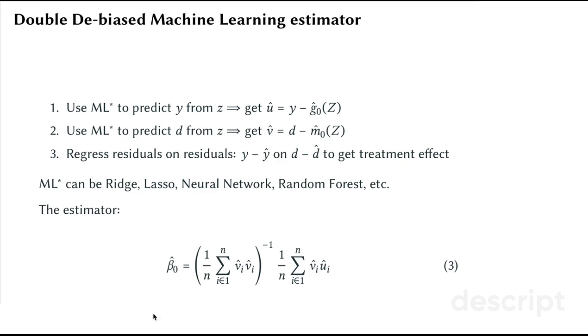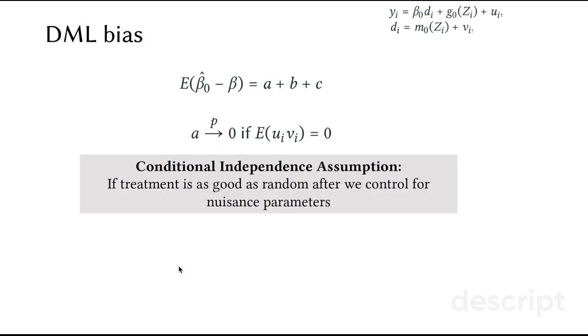However, the estimator in question has the usual form, and what we care about is that this estimator is unbiased. We can actually estimate what the bias would be in expectation. Expected bias will have three terms, A, B, and C.